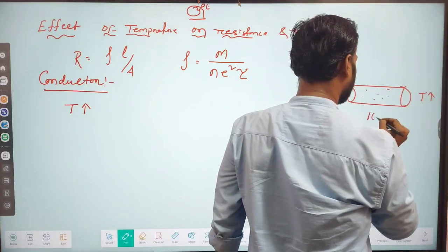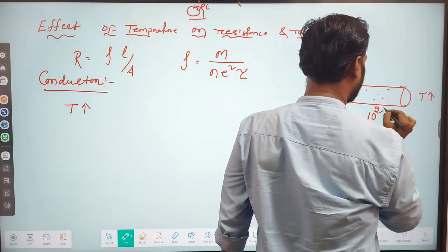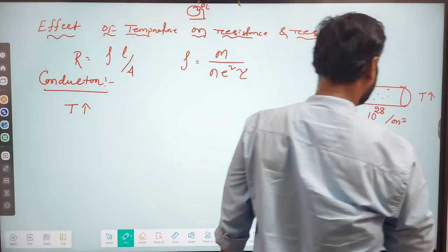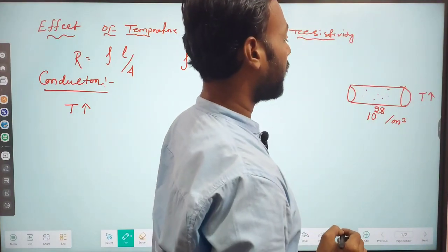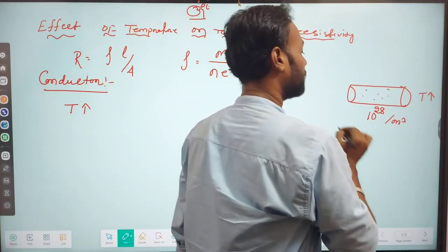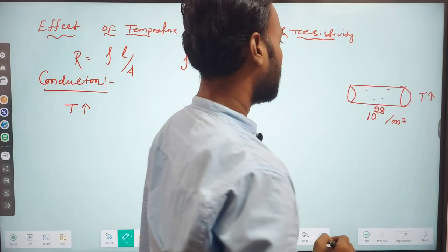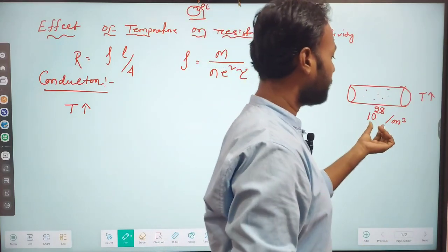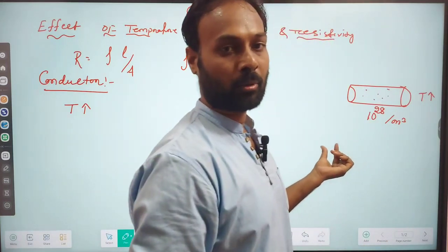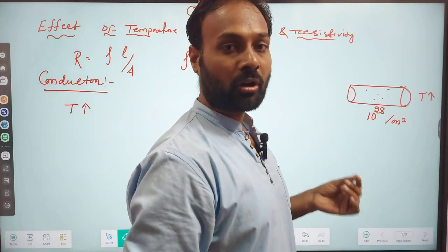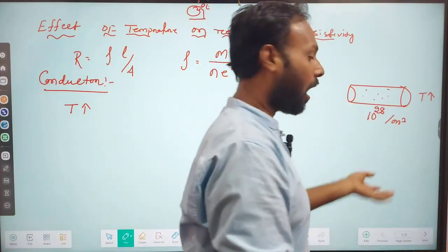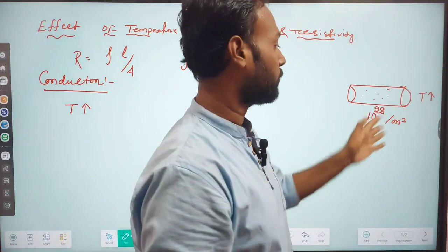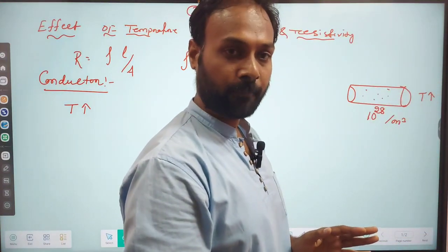In a conductor there are 10 to the power 28 number of free electrons per cubic meter. This is the free electron count. So 10 to the power 28 number of free electrons per cubic meter are present inside the conductor.